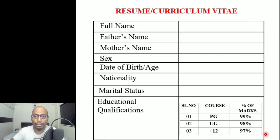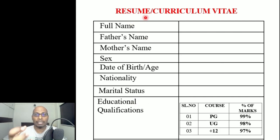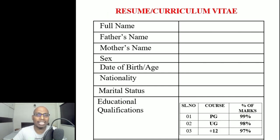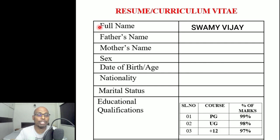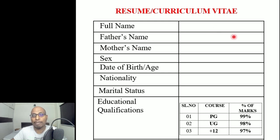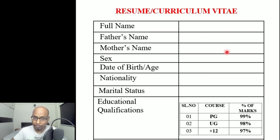In the resume or curriculum vitae, after writing the covering letter, divide your page into two halves, draw a center line, and prepare a table. You need to include around 13 to 14 fields — three marks are awarded for the covering letter and three for the resume. Write your full name with initial expansion in capital letters, then father's name and mother's name, also in capital letters.